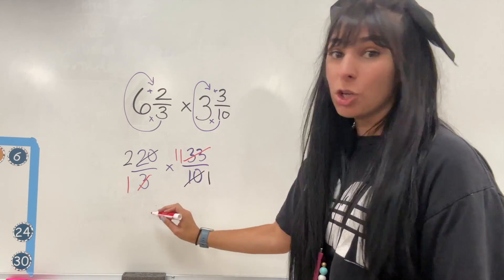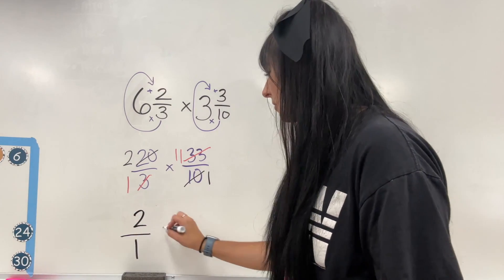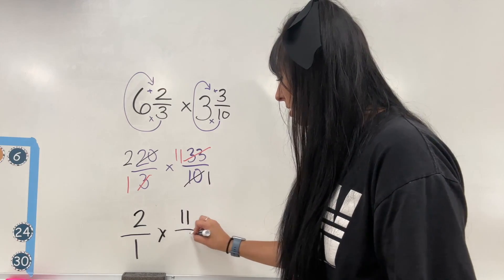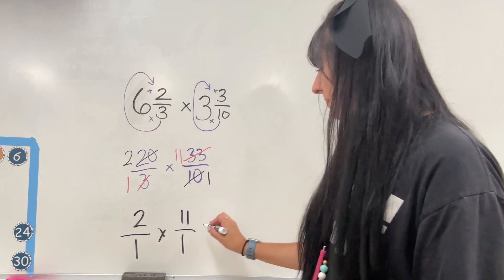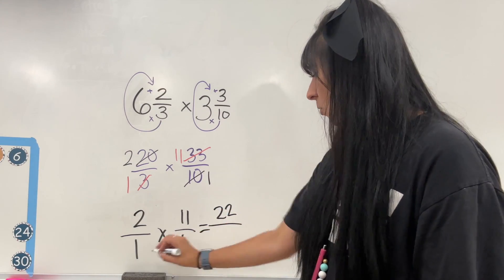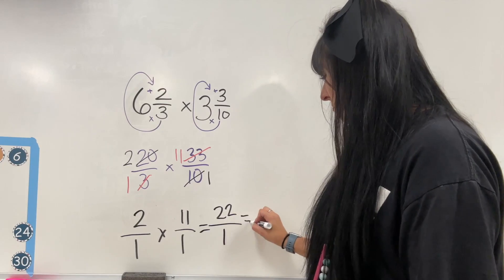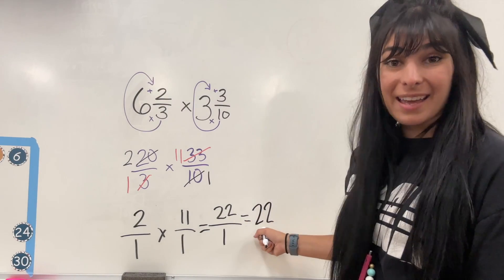So my new equation, I'll write down at the bottom, two over one times 11 over one. That's the simplified version. And I can just multiply across, 11 times two is 22, one times one is one. One goes into 22 twenty-two times. And that is our final answer.